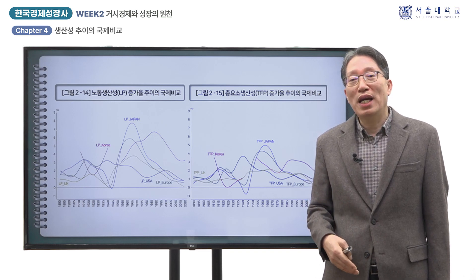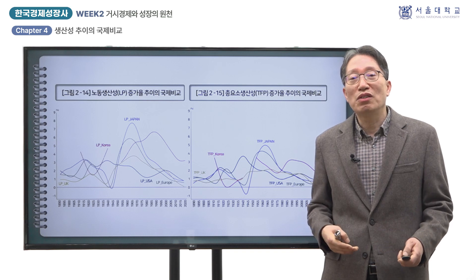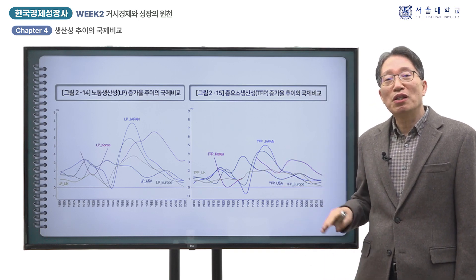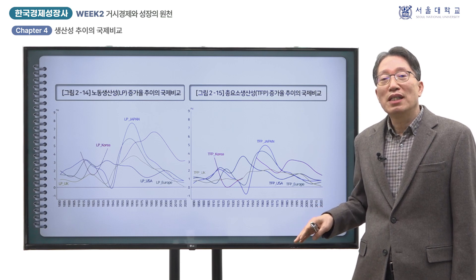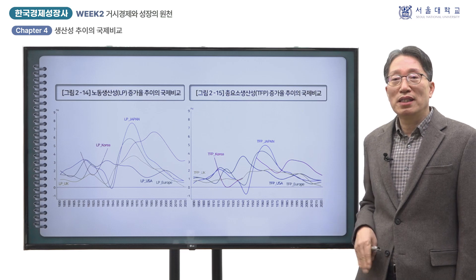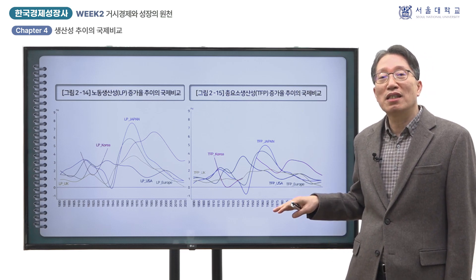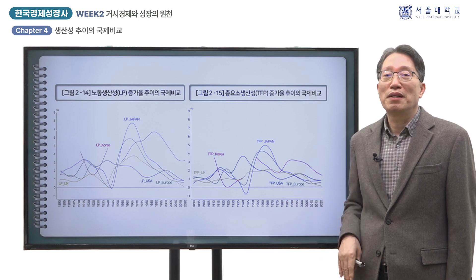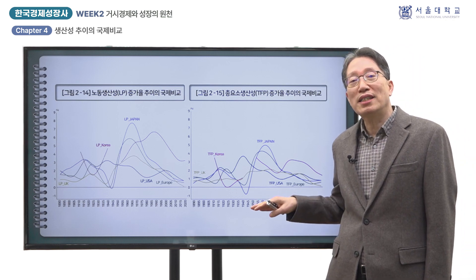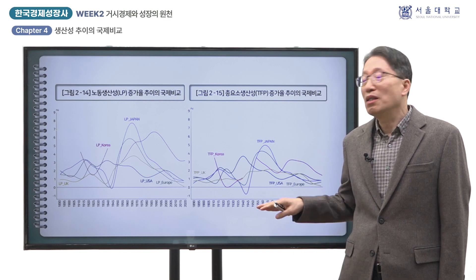기술 격차가 좁혀진 이후에는 주요 국가의 생산성 증가율이 빠르게 하락하는 추세를 보였습니다. 다만 미국의 경우 1980년대부터 2000년대에 걸쳐 상대적으로 미약하지만 증가 추세로 반전되었는데, 이는 정보통신기술이 생산성을 끌어올린 효과로 평가됩니다. 정보통신기술의 확산과 생산성 증대 효과는 나라에 따라 편차가 큰 것으로 보입니다.